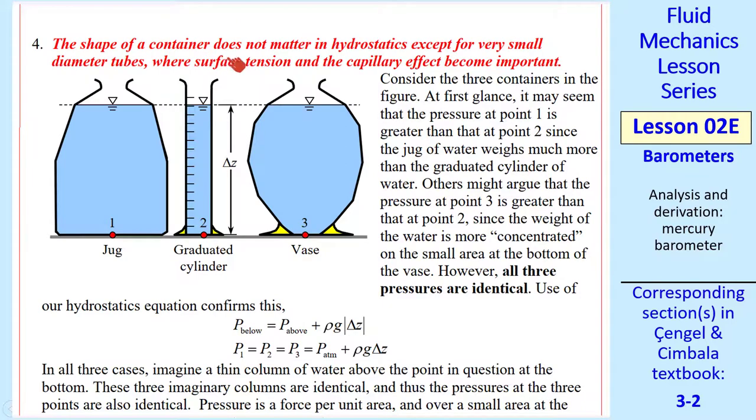Rule number four: shape of a container does not matter in hydrostatics, unless you have very small diameter tubes where surface tension and capillary effects are important. Consider three containers all filled up to the same level with water: a jug, a graduated cylinder, and a vase. Some students may think that point 1 has a higher pressure than point 2, since this is such a large jug. Others may think that point 3 has a higher pressure than point 2 or point 1, because all the water is concentrated on that point at the bottom. But it turns out that p₁ and p₂ and p₃ are all equal.